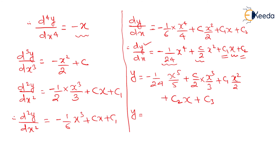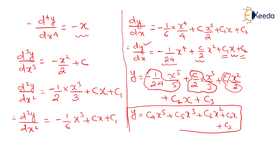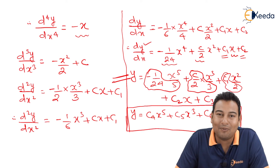We got the solution. If you want to write it in a better way, you can rename the constants: minus 1/120 x⁵ plus a new constant C4 times x³ plus C5 times x² plus C2·x plus C3. You can leave your answer at the previous step also - no problem. But if you replace with simplified constants your answer will look good. Hope you understood, we're done with the problem. Thank you.